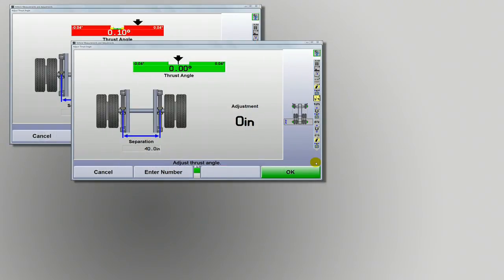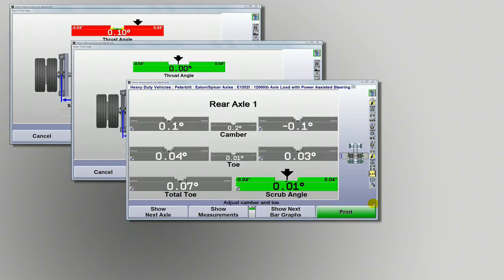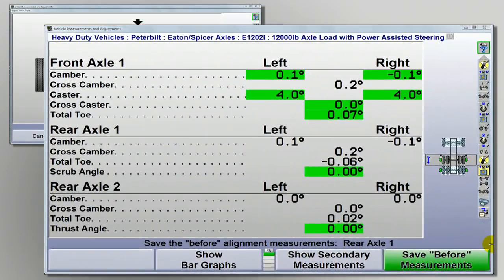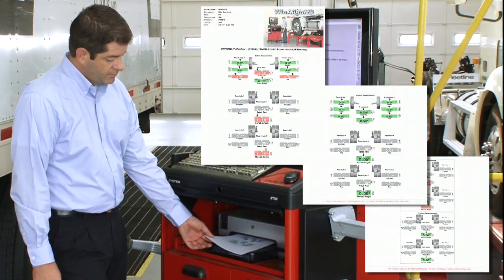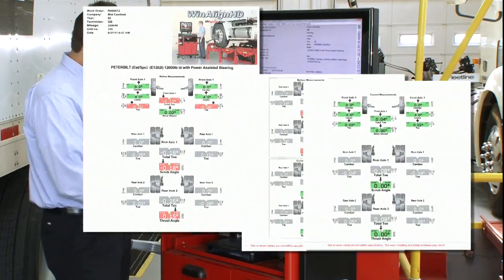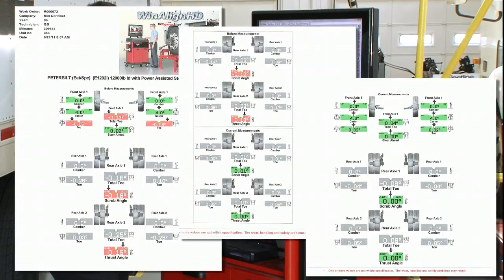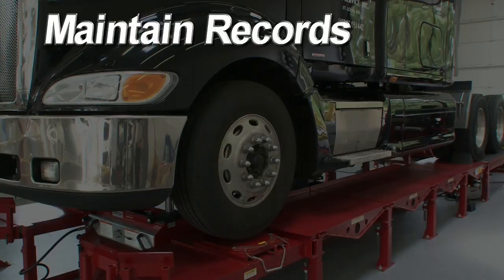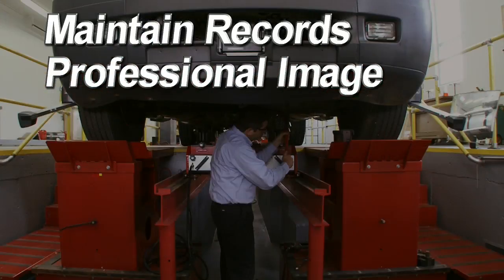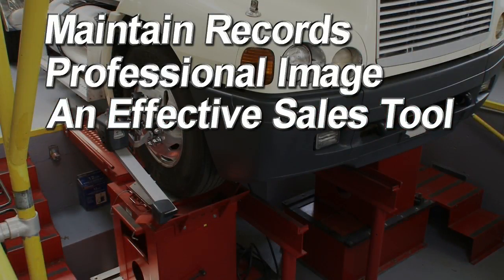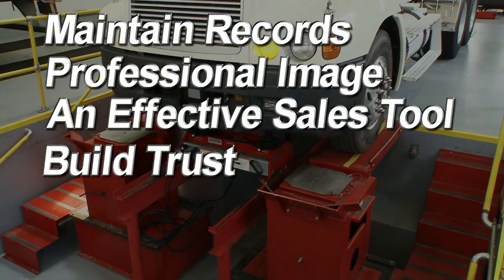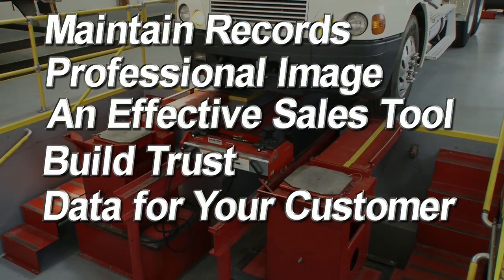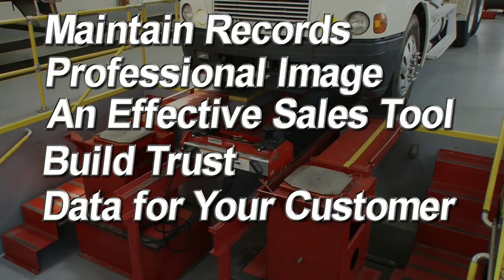WinAlign HD captures before and after readings for all measurements on every axle. So at the close of the alignment, you can print a copy of the work performed. A printed record of every job helps you sustain quality assurance in the alignment bay, maintain records for repeat customers, bolster your professional image, and helps you better sell your alignment service. It also helps instill trust and provides your customer accurate and more complete data for their maintenance records.